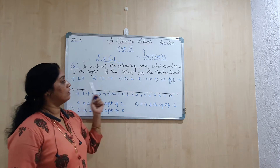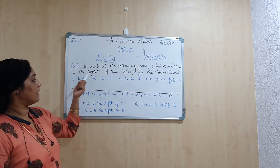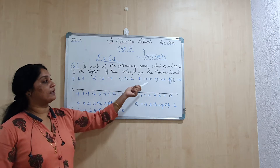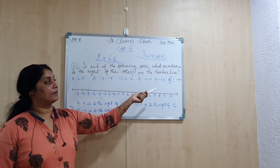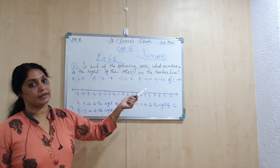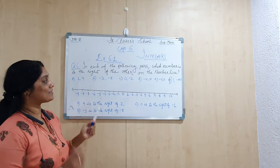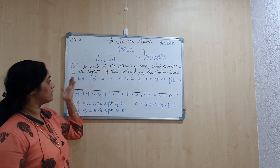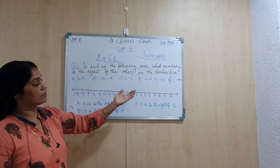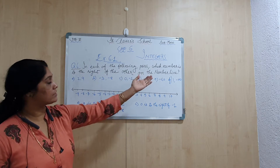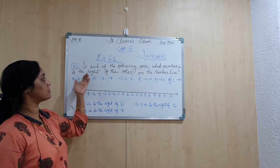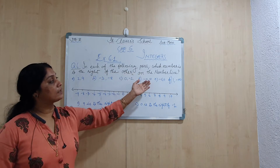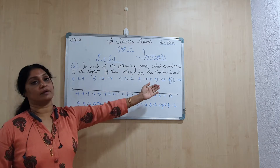So you have parts A, B, C, D, E, and F — in each pair given, you need to find which number is on which side, i.e., which number is to the right of the other on the number line.